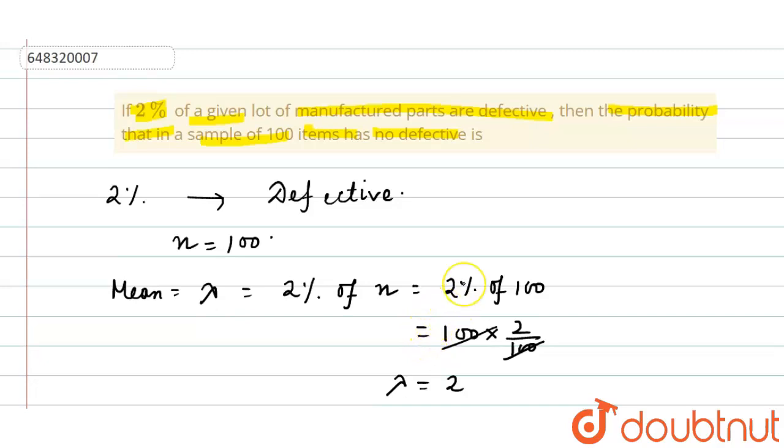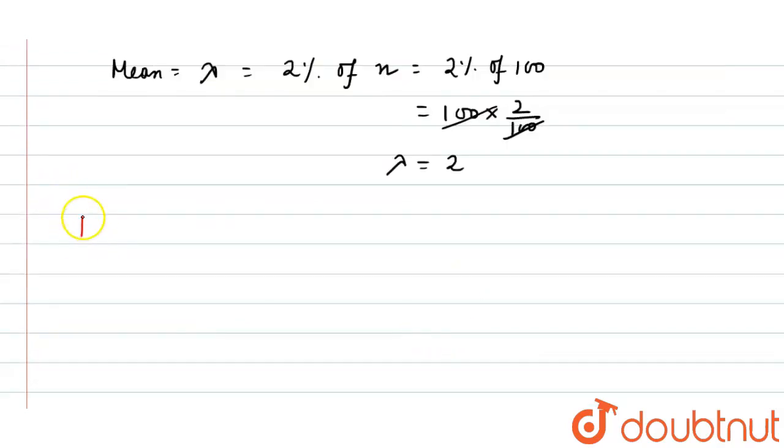Now we find probability of no defective. Probability of no defective means probability of x equals to 0. We know for the Poisson distribution, probability of x equals to x equals to e to the power minus lambda, lambda to the power x by x factorial, where x equals to 0, 1, 2 dot dot infinity, 0 otherwise.